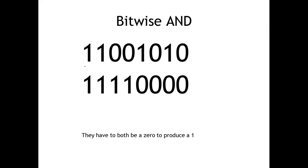We'll start off with the bitwise AND. We're taking two eight-bit numbers — just count the number of places and we have eight bits. We're performing the bitwise AND on those two numbers. The result is a one only if both of the inputs are one. So zero-zero results in a zero, and one-zero results in a zero because they're not both one.